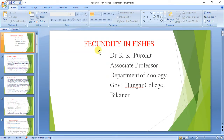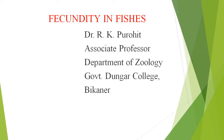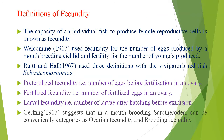Dear students, today we will discuss about fertility in fishes. The capacity of an individual fish to produce female reproductive cells is known as fertility. Wellcome 1967 used fertility for the number of eggs produced by a mouth-breeding cichlid and fertility for the number of eggs produced.